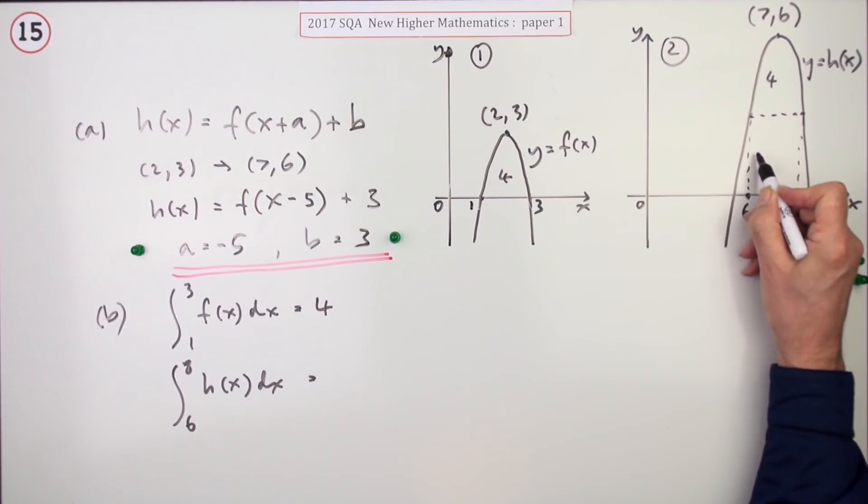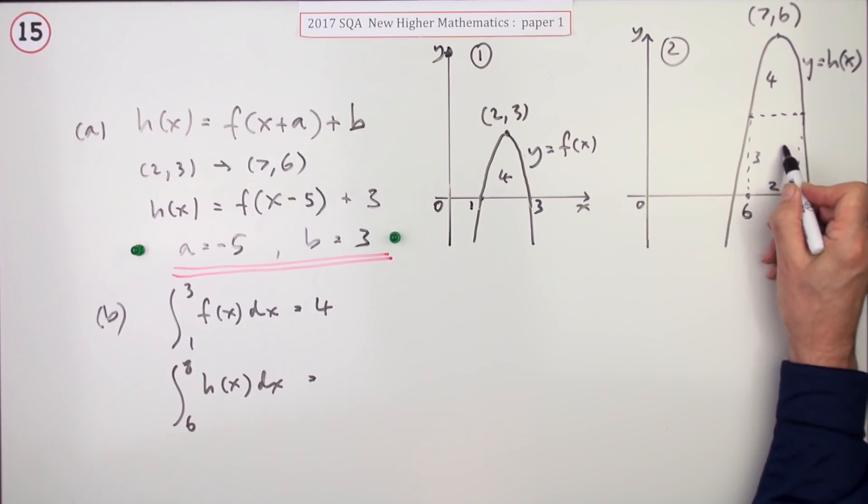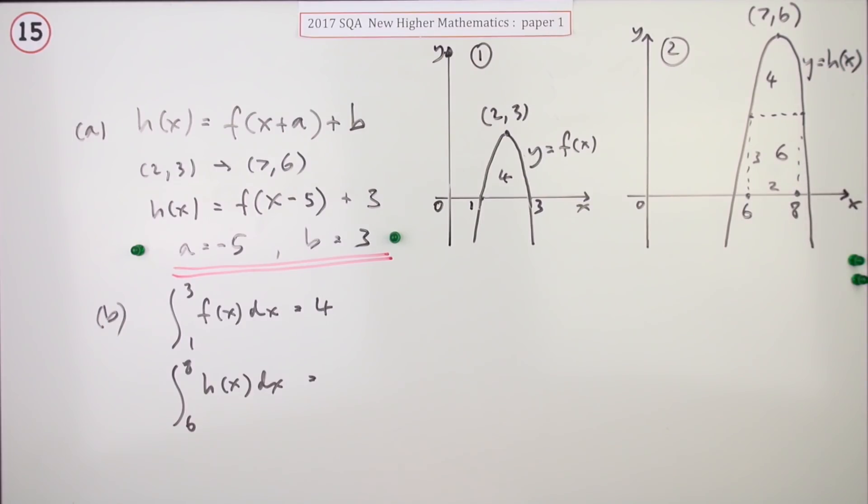So this height here is 3 and that distance there is 2. So this part has an area of 6. I'll just put down the two parts. So it's made up of 6 plus 4, which equals 10. It doesn't give any units here because it just said 4. So I'll just put 10.